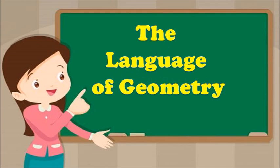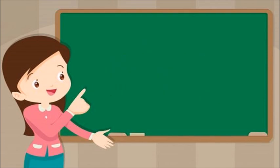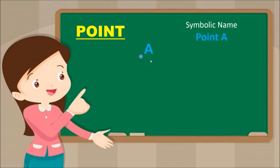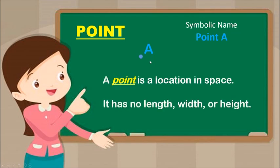The language of Geometry. First is Point. As you can see in the figure, there is a point designated as A. The symbolic name is Point A. A point is a location in space. It has no length, width or height.